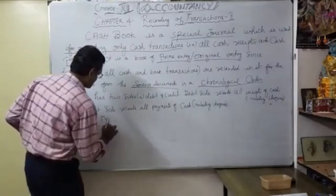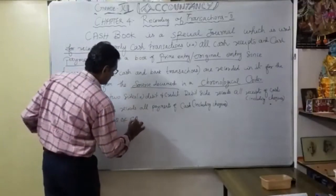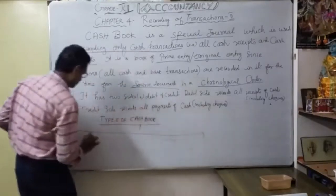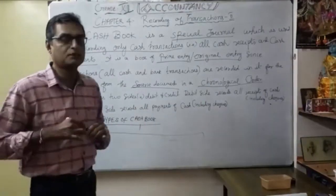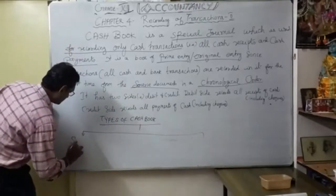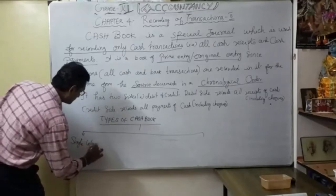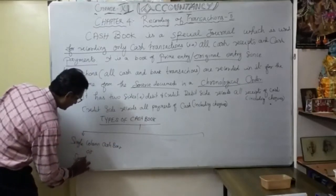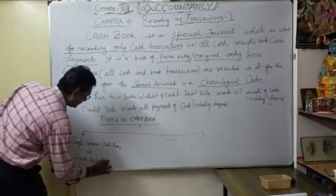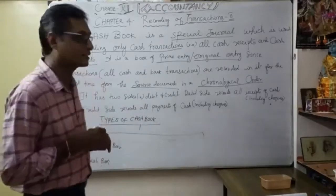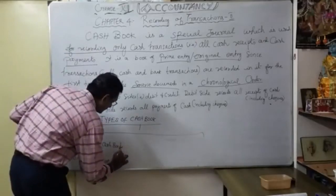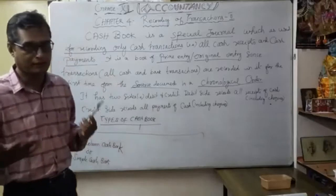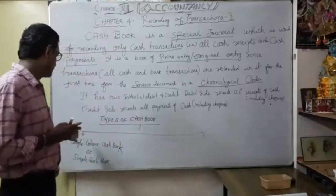What are the types of cash book? Type one is the Single Column Cash Book, also called the Simple Cash Book — only cash transactions are recorded. It is simple; that's why it is called the simple cash book. Any receipt and any payment — only cash transactions — that is called the single column cash book.